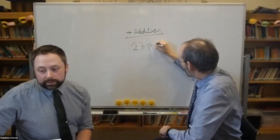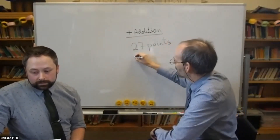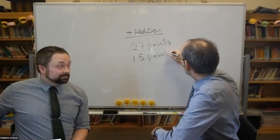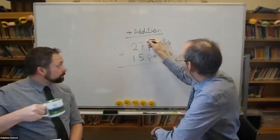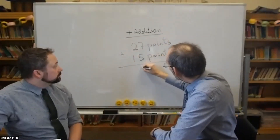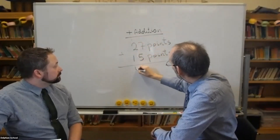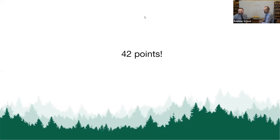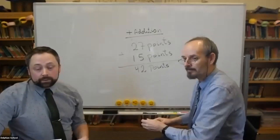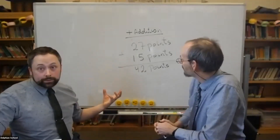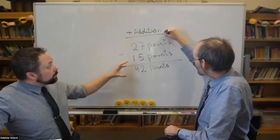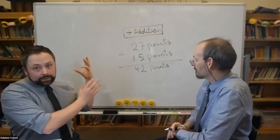Torben goes ahead and solves it on the board: 27 plus 15. Five plus 7 is 12, carry the 1, giving us 42 points. The answer was 42 points — good job, Torben. What he did was first ask what is the question, identify 'altogether' as the clue for addition, and then turn all those English words into a simple addition problem.